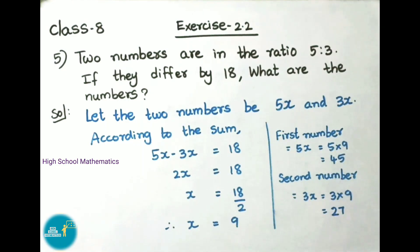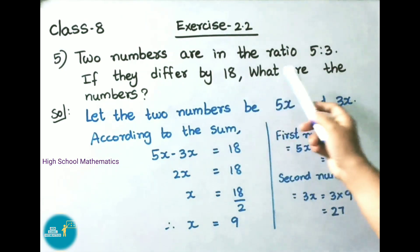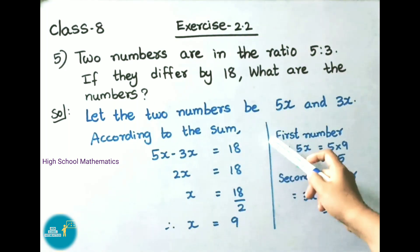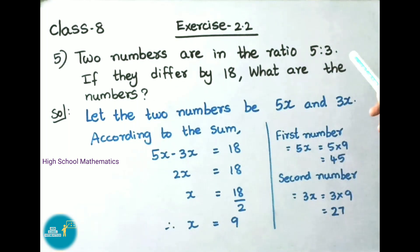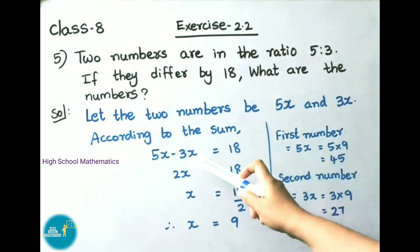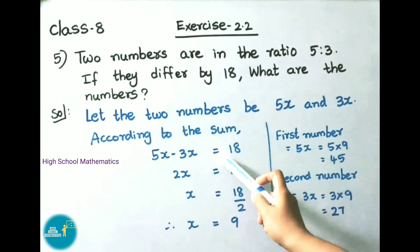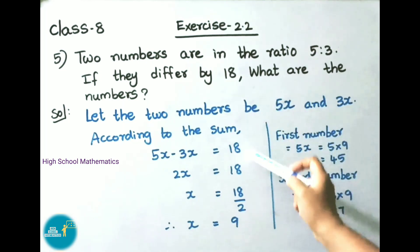See now question number 5: two numbers are in the ratio 5 is to 3. If they differ by 18, what are the numbers? Let the two numbers be 5x and 3x as they are given in ratio. According to the sum, those two numbers differ by 18. So the difference is 5x minus 3x, that equals to 18.